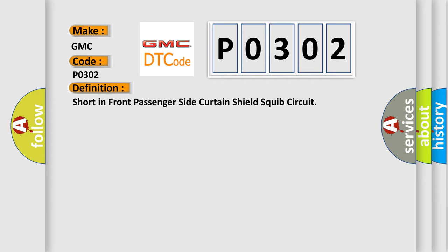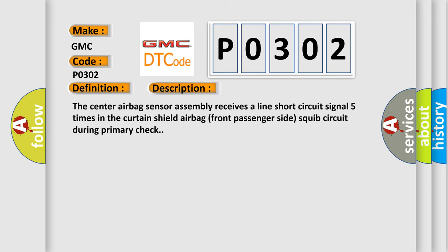And now this is a short description of this DTC code. The center airbag sensor assembly receives a line short circuit signal five times in the curtain shield airbag front passenger side squid circuit during primary check.